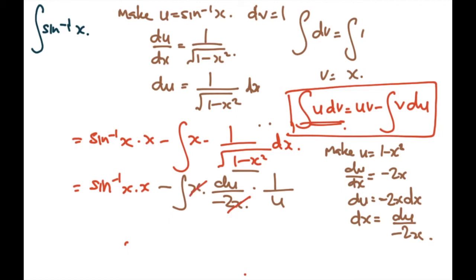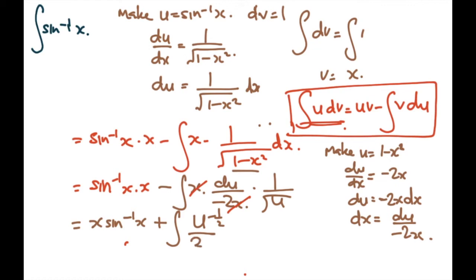Now let's cancel what we can — the x terms cancel. What's left is x inverse sine x, and with the two negatives becoming positive, we're integrating what remains. The square root means it's u to the power of negative one-half. Bringing it to the numerator makes it u to the negative half. The negatives give positive, and the 2 from negative 2x remains, so we integrate 1 over 2 times u to the negative half du.